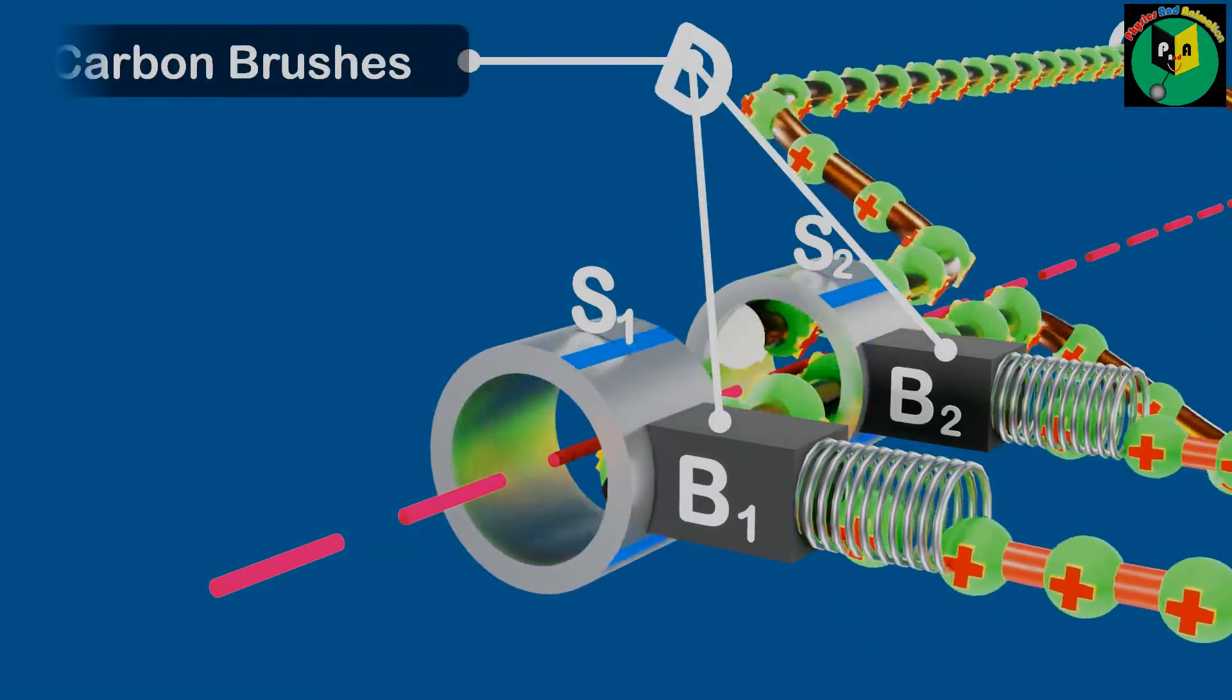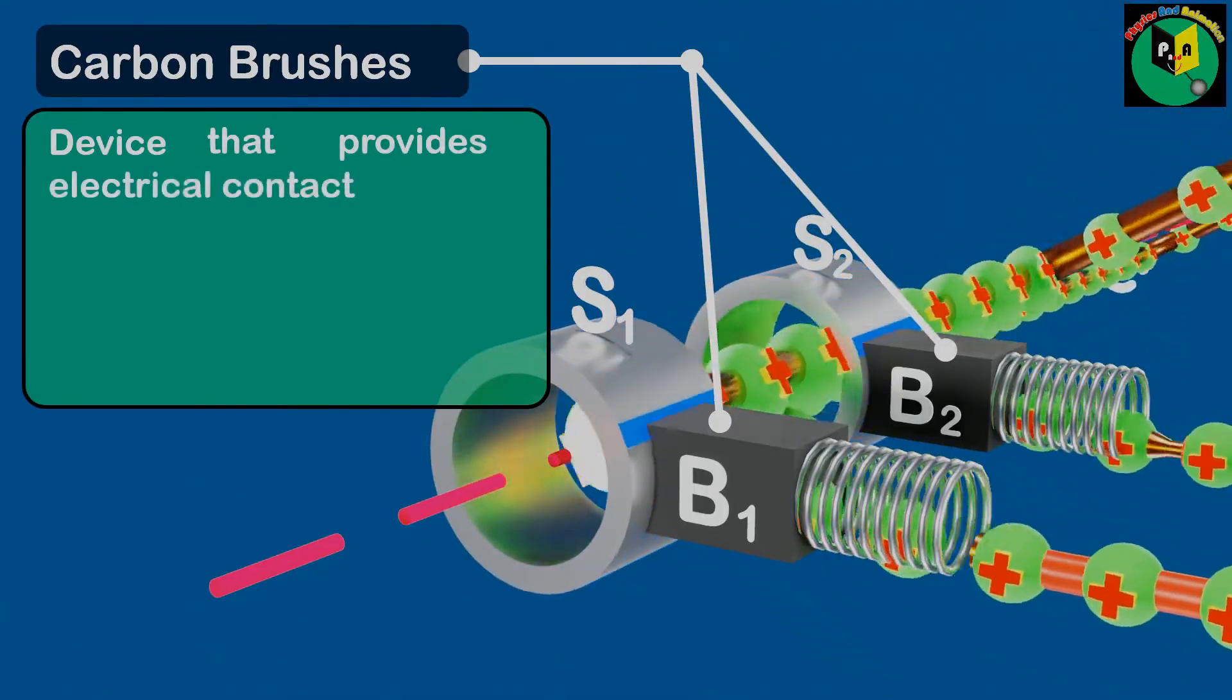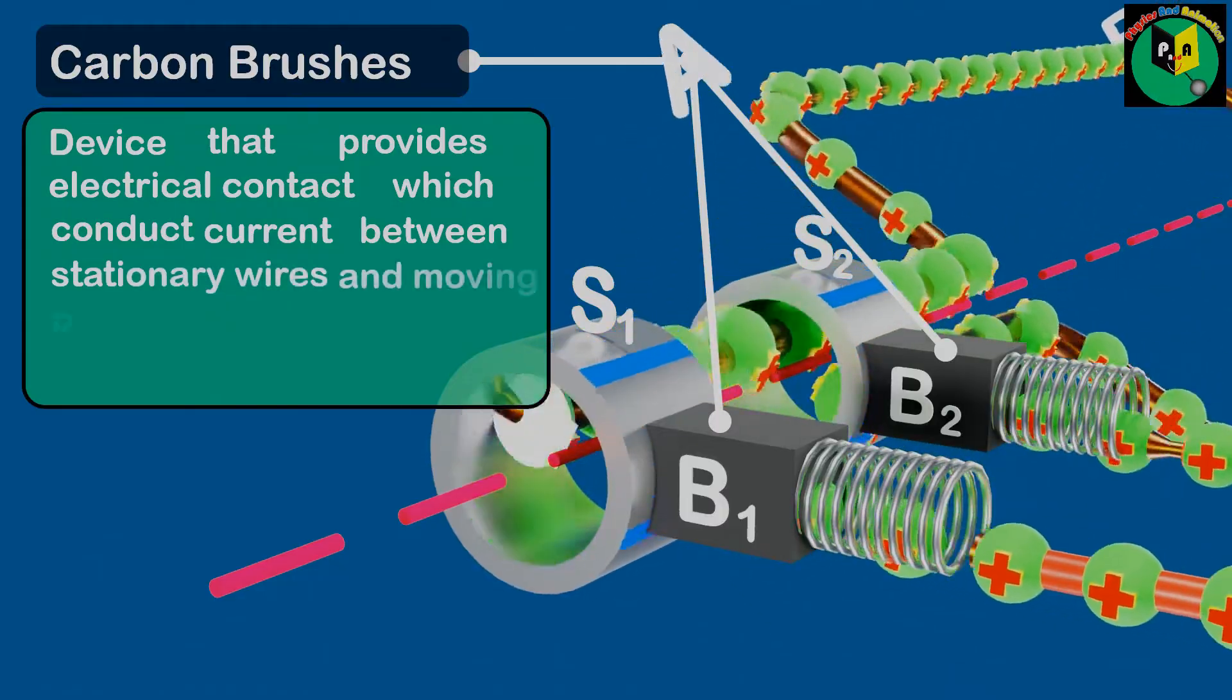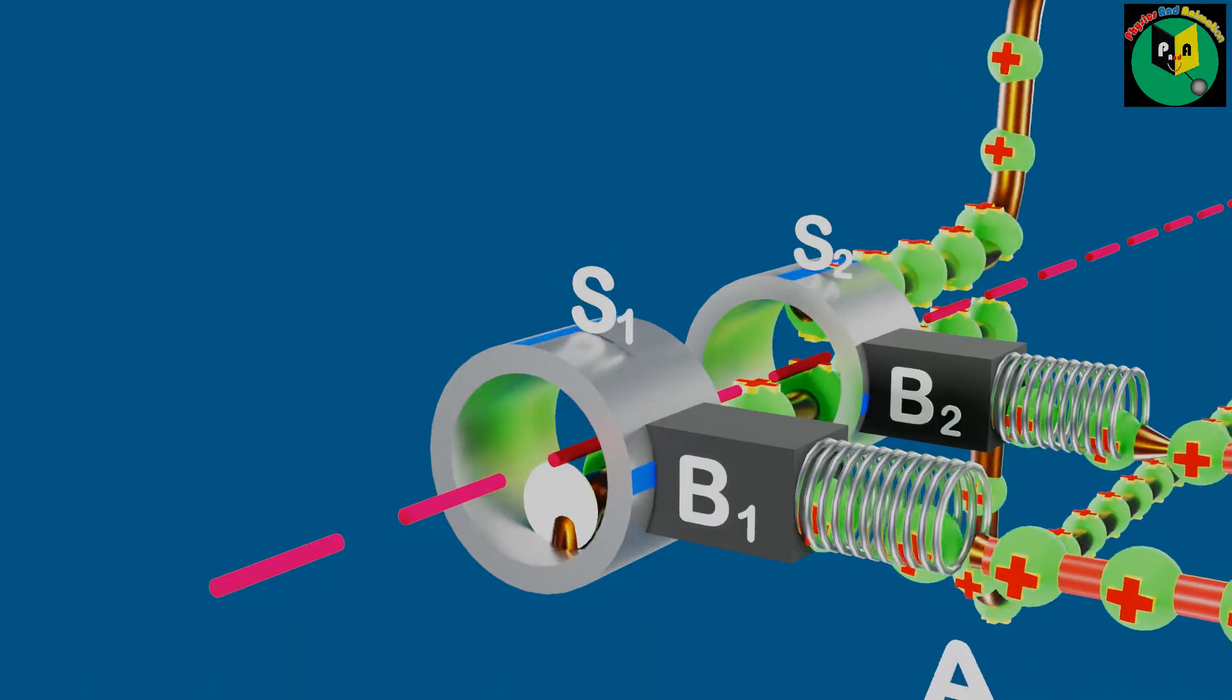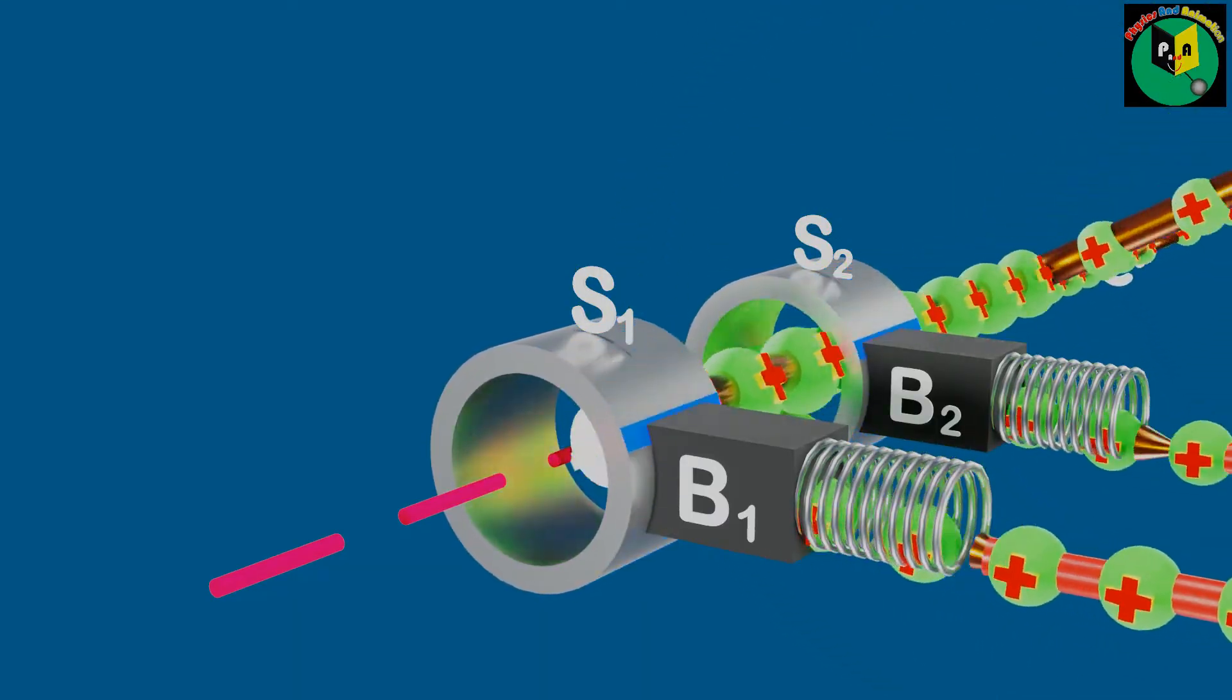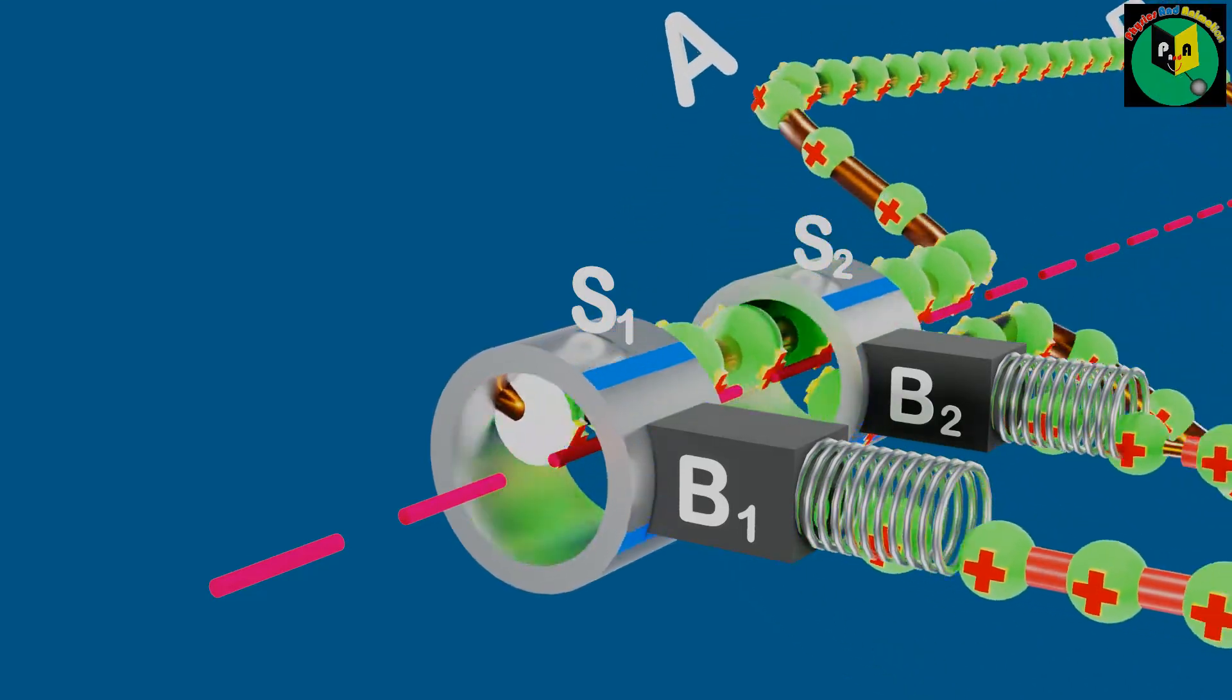Carbon brushes can be defined as a device that provides electrical contact which conducts current between stationary wires and moving parts, most commonly in a rotating shaft. As it is made of graphite which has lubricating property, due to this, it also reduces friction at the contact.